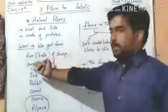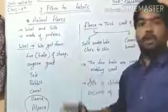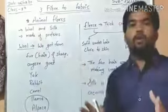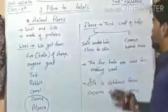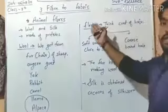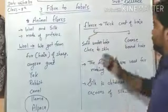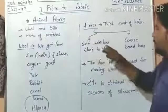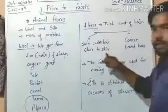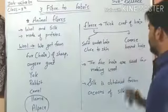The thick coat of hair on the body of wool-yielding animals is called fleece. Fleece is of two types: one is soft underhair close to the skin, and the other is coarse beard hair.